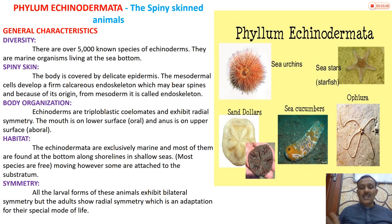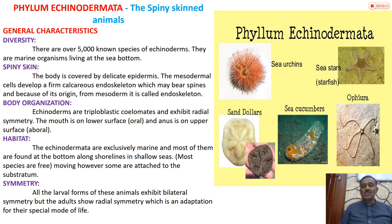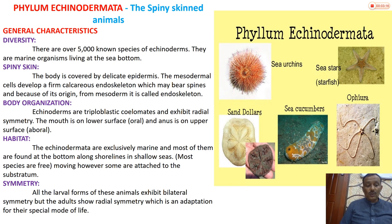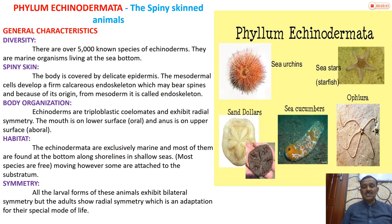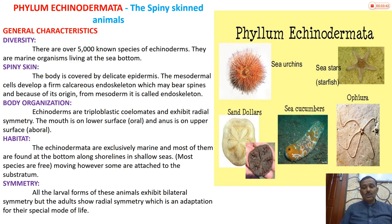Most are found in shallow seas. Most species are free-living, meaning they can move from one place to another, while some are attached to substratum - fixed to a rock or substrate. Regarding symmetry: all larval forms exhibit bilateral symmetry, but adults show radial symmetry in body shape, which is a secondary adaptation for their special mode of life.